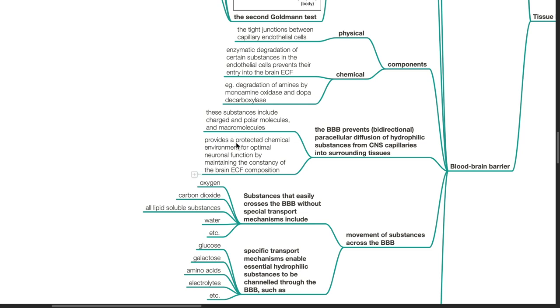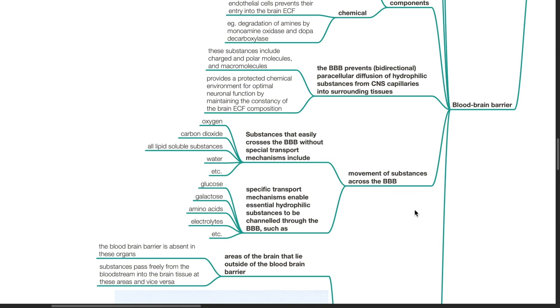These substances include charged and polar molecules and macromolecules. This provides a protected chemical environment for optimal neuronal function by maintaining the constancy of brain ECF composition.